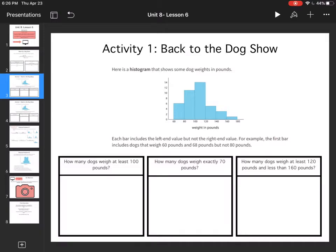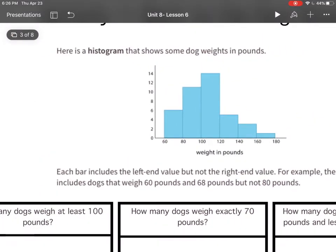How many dogs weigh at least 100 pounds? I'm using this histogram, and a histogram is different from a bar graph because it shows intervals or ranges. Each bar includes the left-end value but not the right-end value. For example, the first bar includes dogs that weigh 60 and 68 pounds but not 80 pounds.